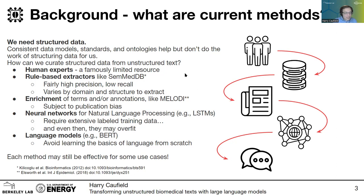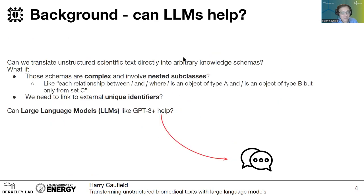Most recently, we've seen the rise of language models like BERT and GPT, which bypass the problem of learning about language from scratch. You start with something that is trained on a broad collection of language and essentially understands what language should look like in practice. I'm going to focus on the use case of how do we translate unstructured scientific text directly into an arbitrary knowledge schema.